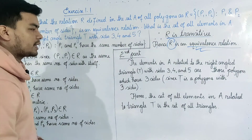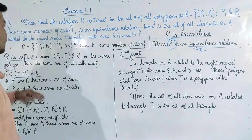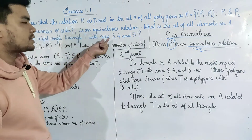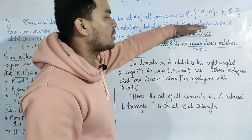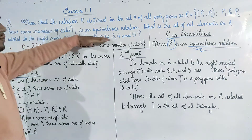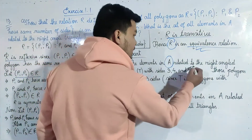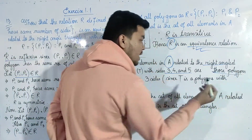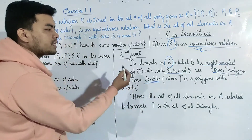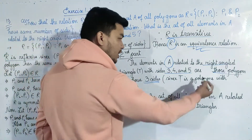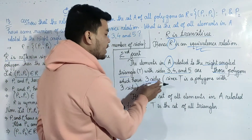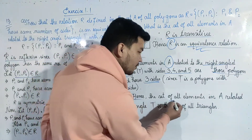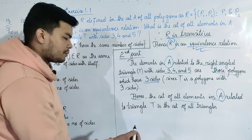The second part is the set of all elements in A related to the right-angle triangle T with sides 3, 4, 5. The right-angle triangle T with sides 3, 4, 5 is a triangle with 3 sides. So the set of all elements in A related to triangle T is the set of all triangles in A.